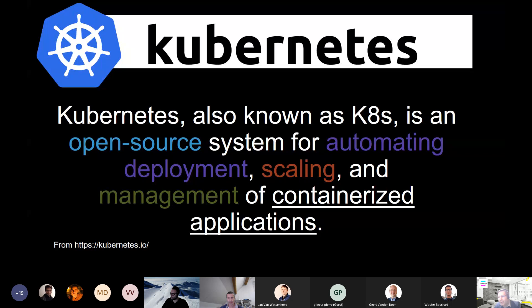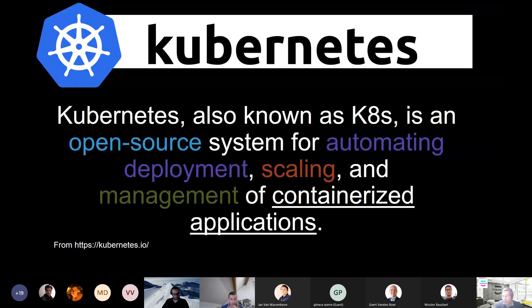Kubernetes is also open source. It was originally developed by Google for its own purposes and then offered to the community. That is probably one reason it has become so widely adopted. The Kubernetes website states that it builds upon 15 years of experience running production workloads at Google, which proves it works in production.